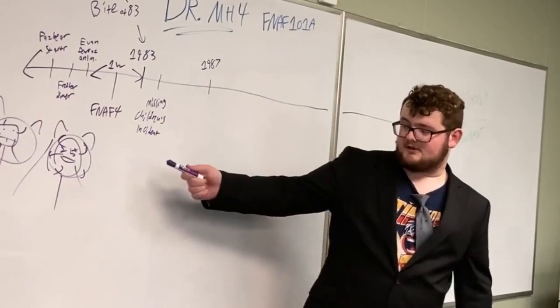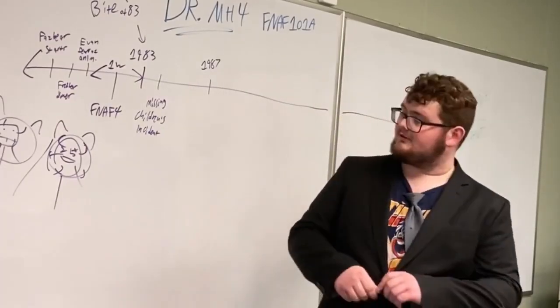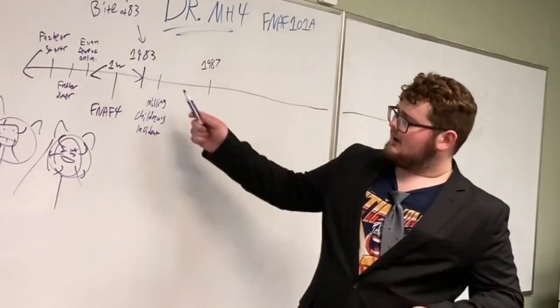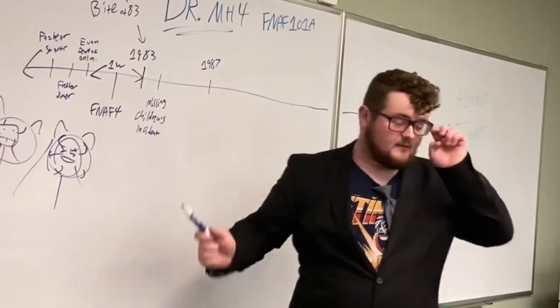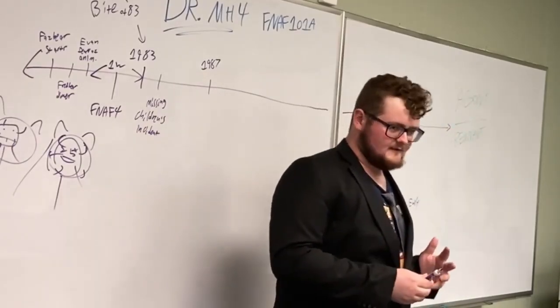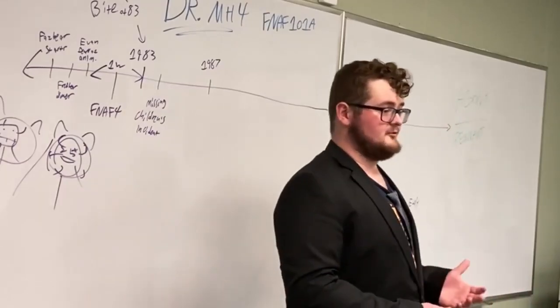The missing children are missing because William Afton donned the spring bonnie suit, which I'm assuming at this point. Somewhere in between the Bite of 83 and the missing children's incident, Fredbear's Family Diner closes down because of the Bite of 83. And they start a new location that is Freddy Fazbear's Pizzeria.